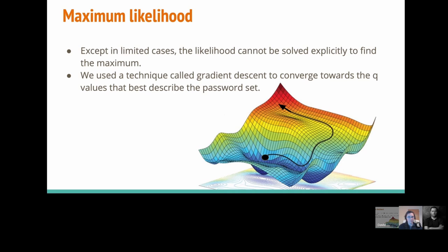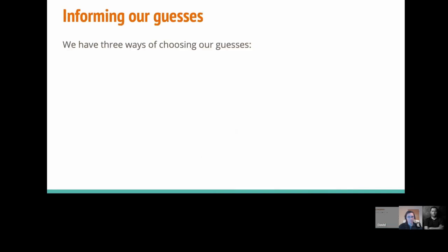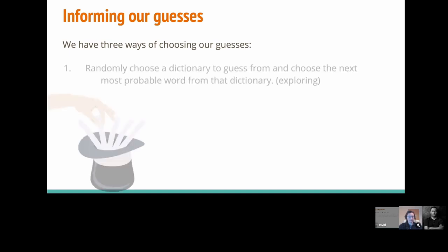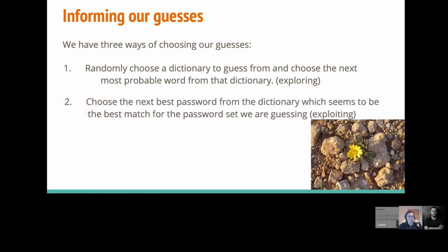The maximum likelihood bit is giving us an estimate of the weights for these dictionaries — which one looks like it's the best match. On the other hand, how we're guessing is perhaps a more interesting question. When we come to choose a new guess from a dictionary, how do we do that? We have a couple of options. One way is we could just randomly choose a dictionary, take the next best password out of that dictionary, and guess it. This is analogous to the multi-armed bandit problem of just trying each machine randomly — you learn lots about the machines, but maybe you're not exploiting the best dictionary.